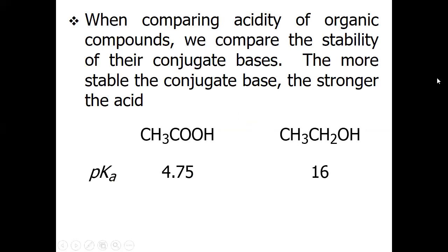When we compare the acidity of organic compounds, we compare the stability of their conjugate bases — the more stable the conjugate base, the stronger the acid. In these two specific examples, we have the two-carbon chain acetic acid and the two-carbon chain alcohol which is ethanol. The dissociation constant of acetic acid is 4.75 and the dissociation constant of ethanol is 16.